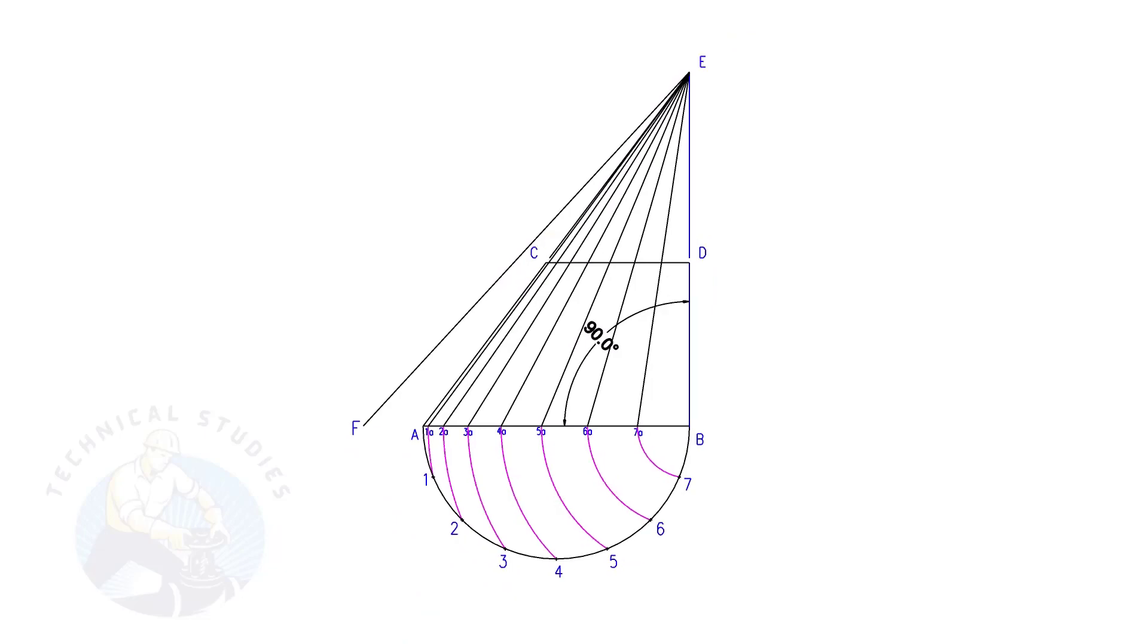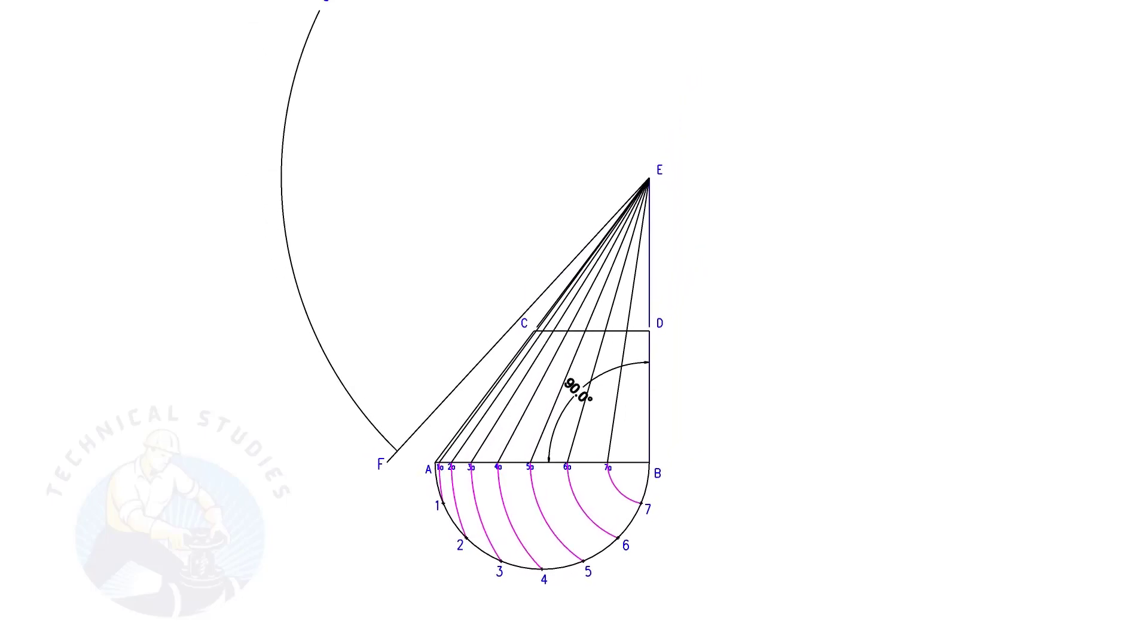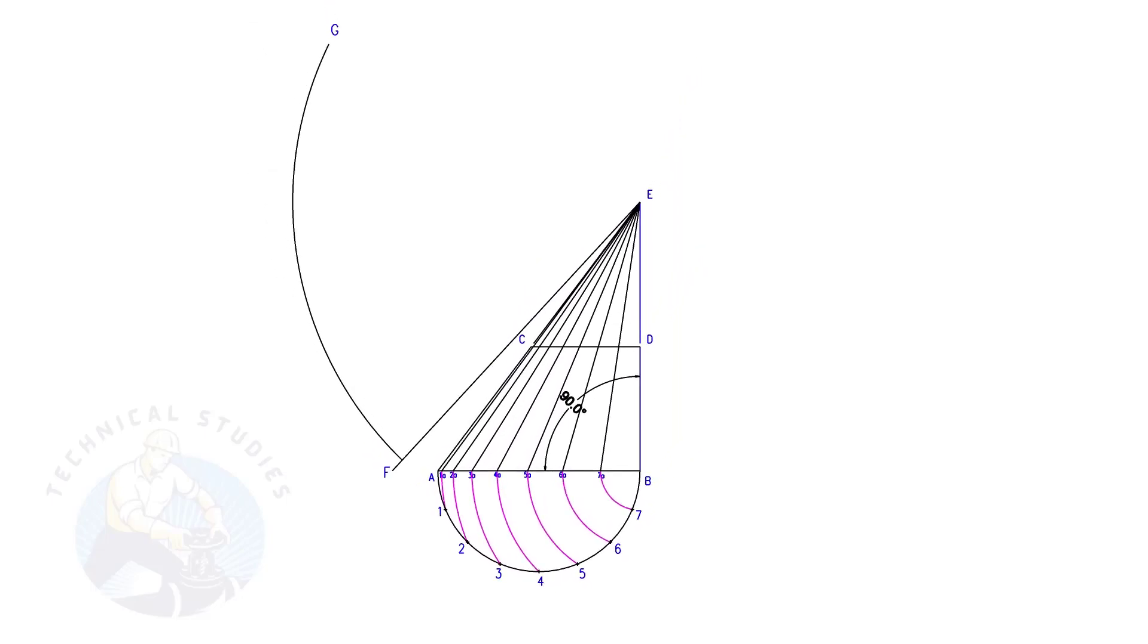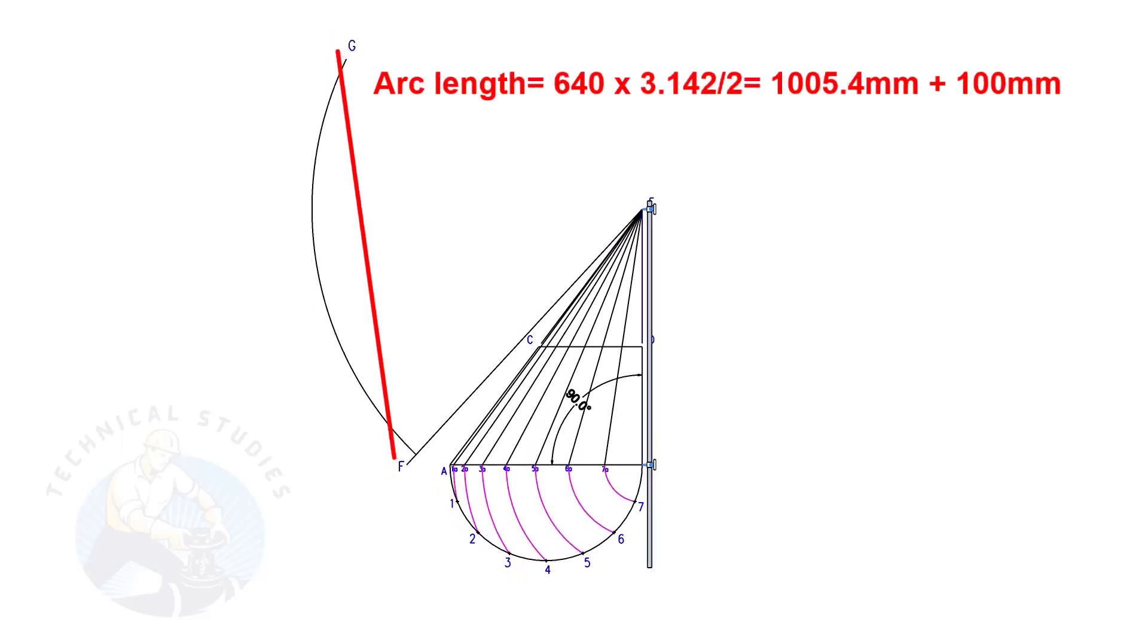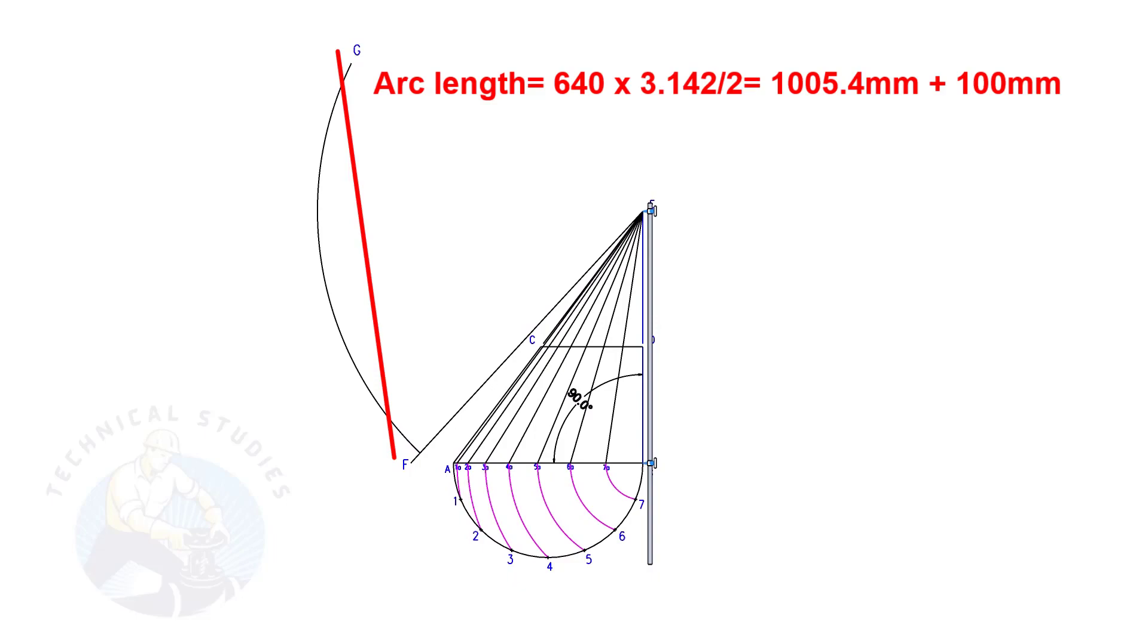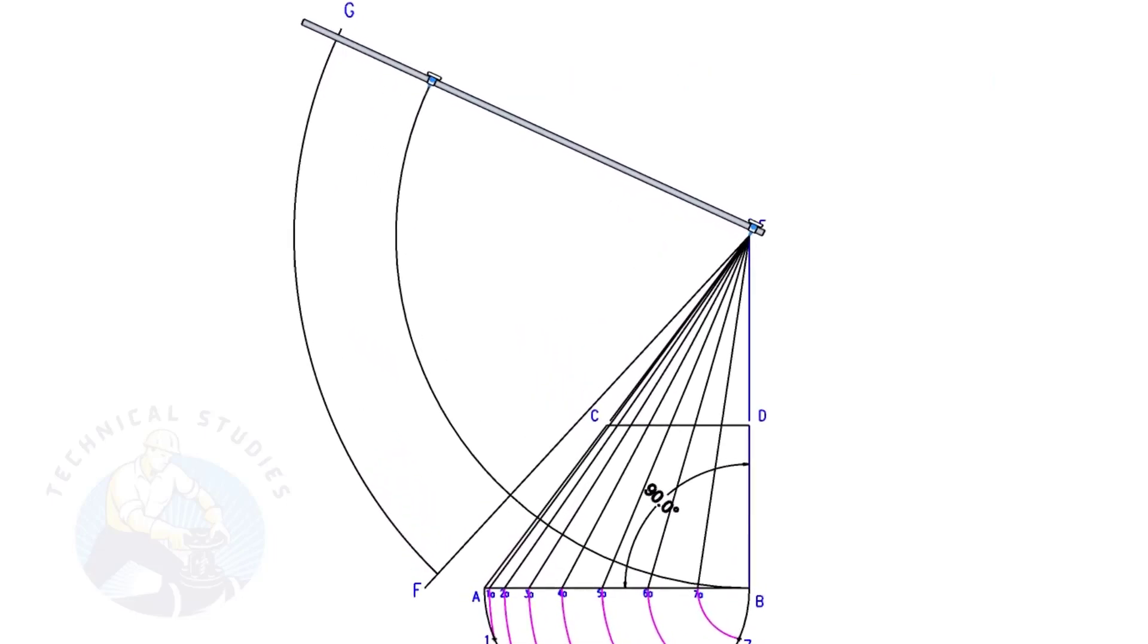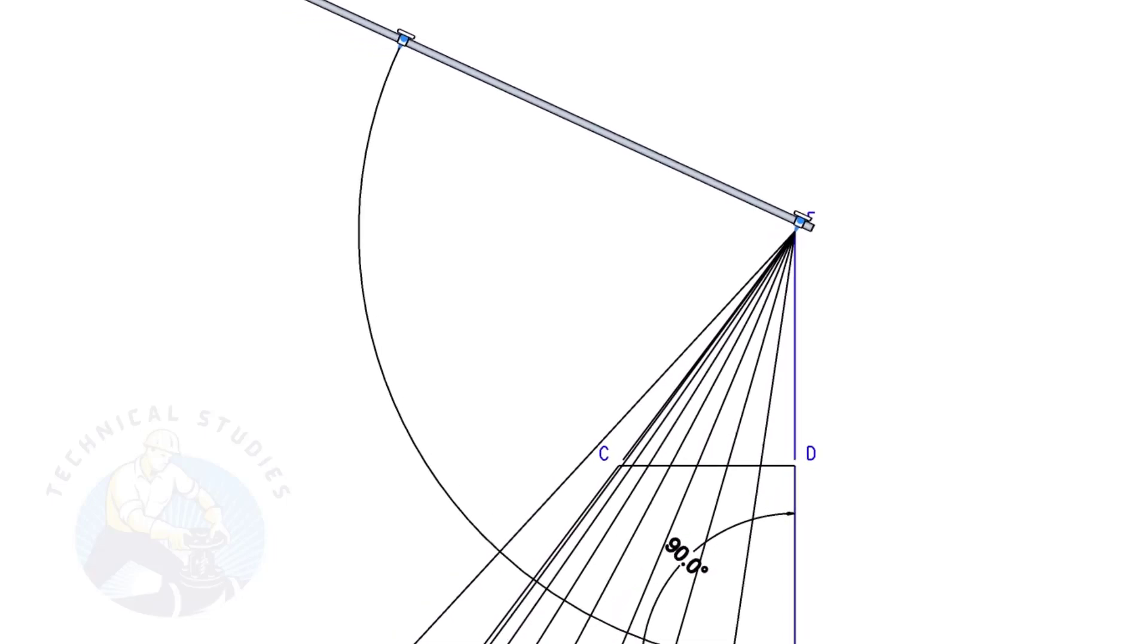Draw arc FG, the length shall be a little more than the half circumference of the bottom diameter. Again, this arc is only for a reference of the half circumference length. Draw arcs EB, E7A, E7B, etc.